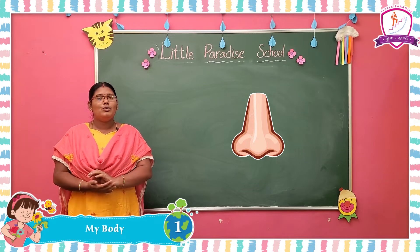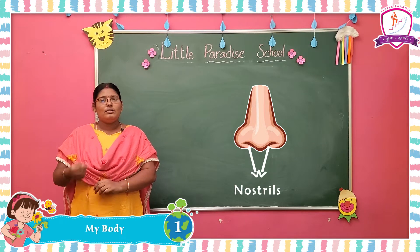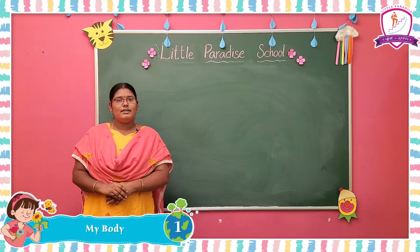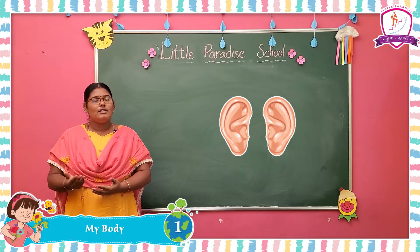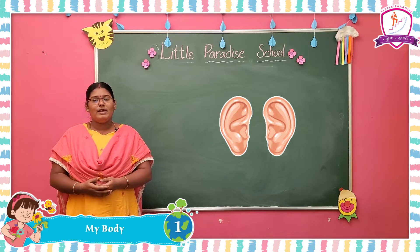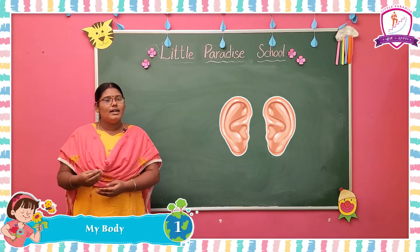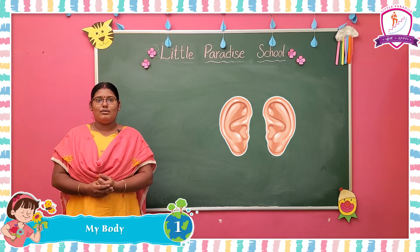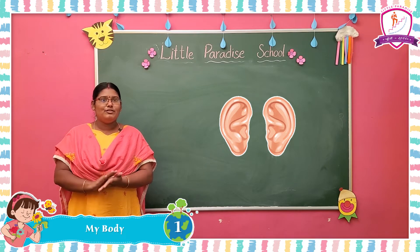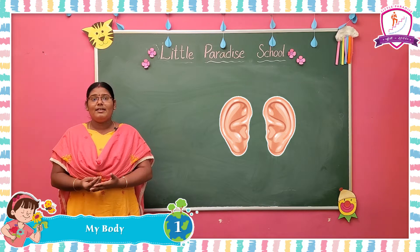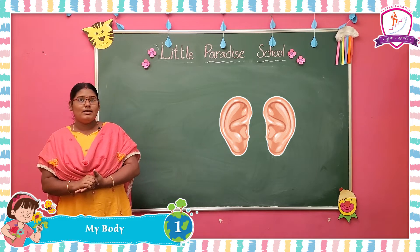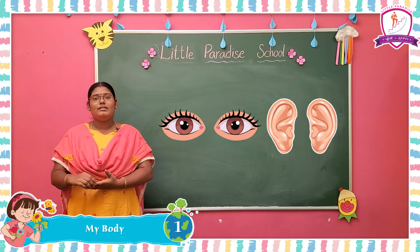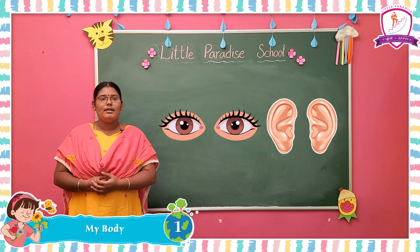The nose has two holes called nostrils. Next, ears. Ears help us to hear the sounds around us. For example, when an aeroplane goes by, how do we know? By sound. We hear the sound and go outside to look. Here, two sense organs are involved — eyes and ears. Our sense organs help us to feel the things around us.